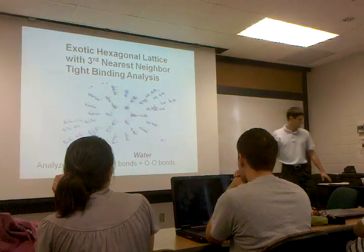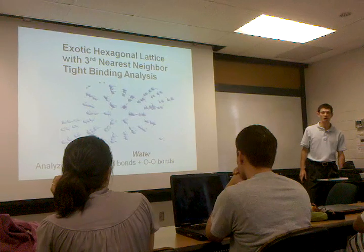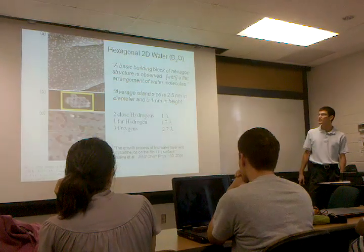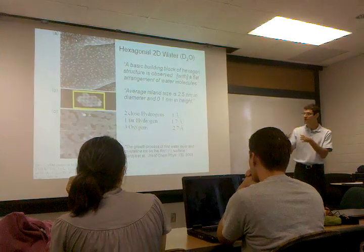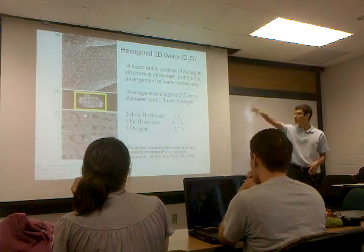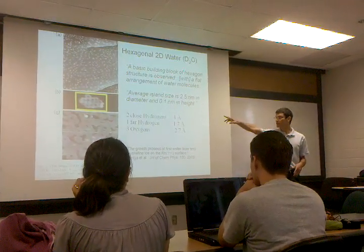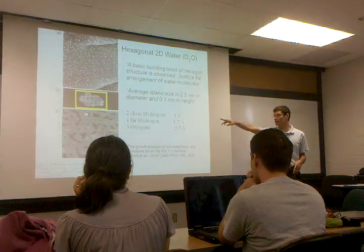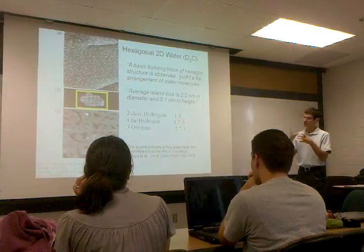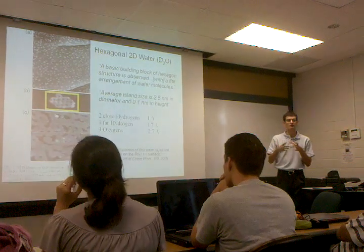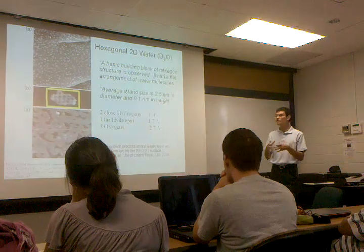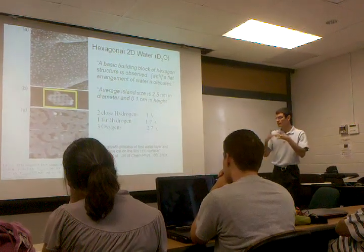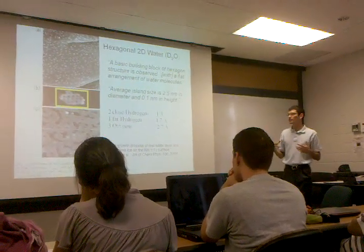However, the reason I decided to choose this is last year, a Japanese group was actually able to make and grow perfectly two-dimensional hexagonal water crystals. They're only an island of a few nanometers in diameter. They actually did it. They grew it at 130 Kelvin on a rhodium surface. And if it got bigger than that, then it started to buckle out of that.